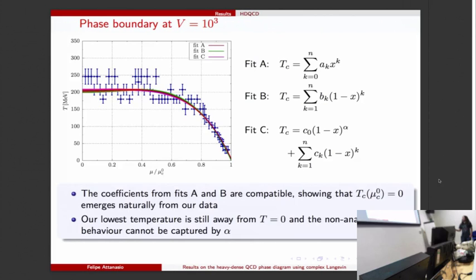Doing the fits we saw that fit A and fit B are completely compatible, so that means our data doesn't require imposing the fit to go through zero here - it comes naturally from the data. But also we don't have enough resolution at low temperature to see any non-analytic behavior, so alpha was compatible with one and we ended up not using fit C, it didn't have any extra information.